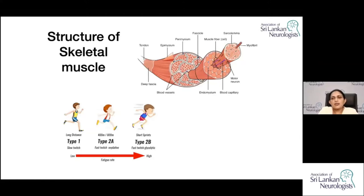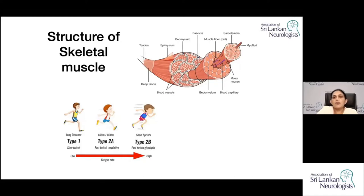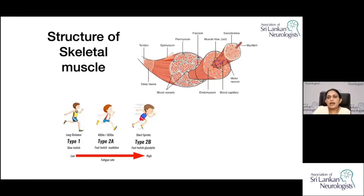When looking at the structure of the muscles, there are three types of muscles in the human body. When we are talking about myopathies, we are mainly concerned about the skeletal muscles. Skeletal muscles are made up of muscle fibers, which are composed of several muscle fibrils connected together. The muscle fiber bundles are bound together by the perimysium and epimysium to form a muscle. There are mainly two types of muscle fibers, which we are concerned with in doing muscle biopsies and disease entities — depending on blood supply, number of mitochondria, energy source, speed of action, and duration of action. Based on these categories, muscle fibers are divided into type one and type two.